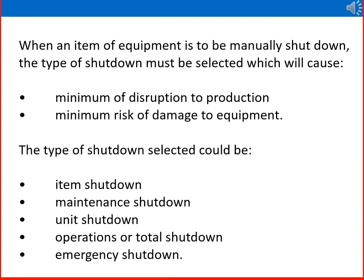When an item of equipment is to be manually shut down, the type of shutdown must be selected which will cause a minimum of disruption to production and a minimum risk of damage to equipment. The types of shutdown that could be selected are: item shutdown, maintenance shutdown, unit shutdown, operations or total shutdown, and emergency shutdown.